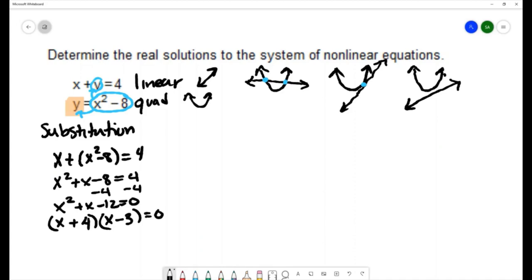Then I'll use the zero product property and set each one of these factors equal to zero. That gives me solutions of x equals negative 4 and x equals positive 3.